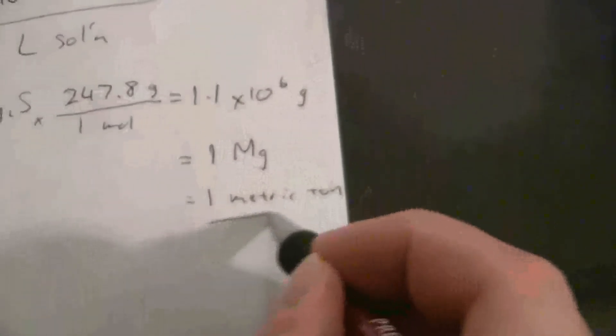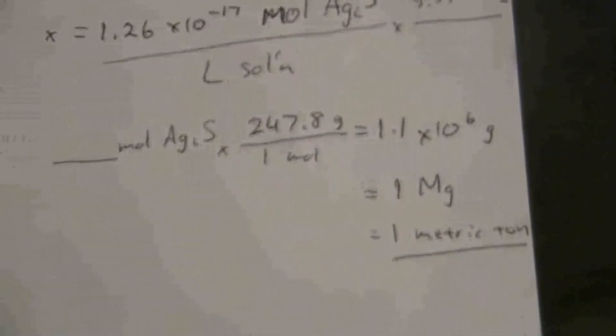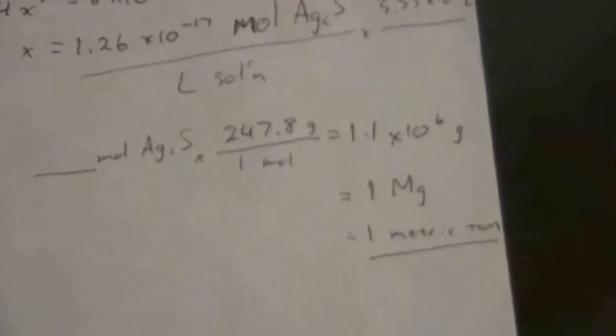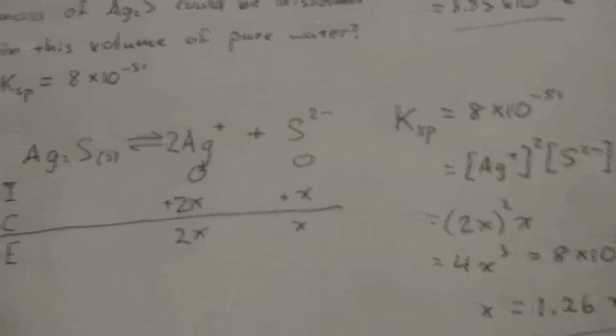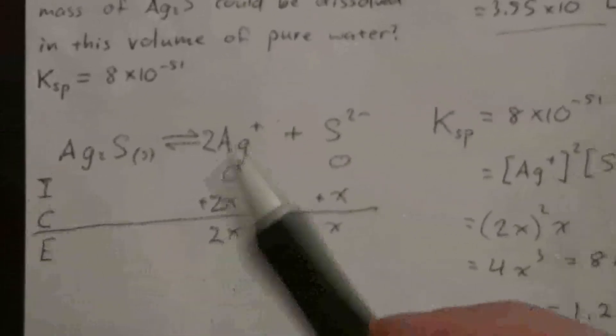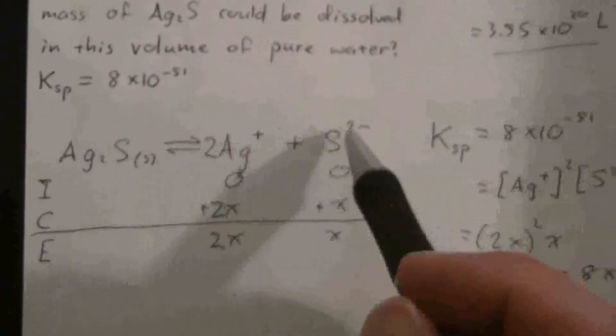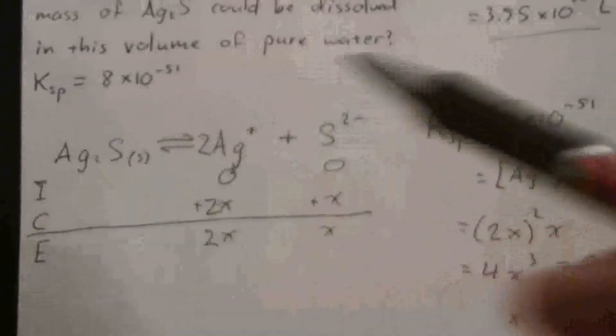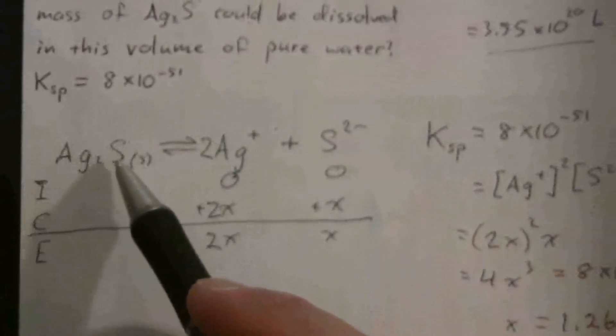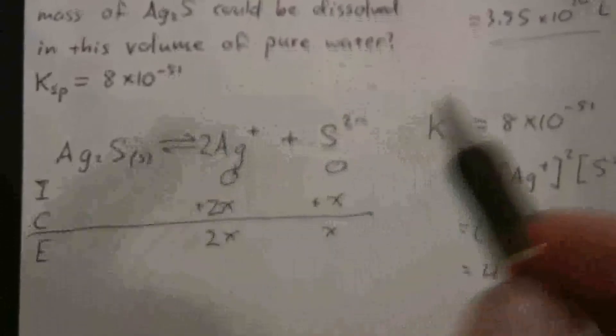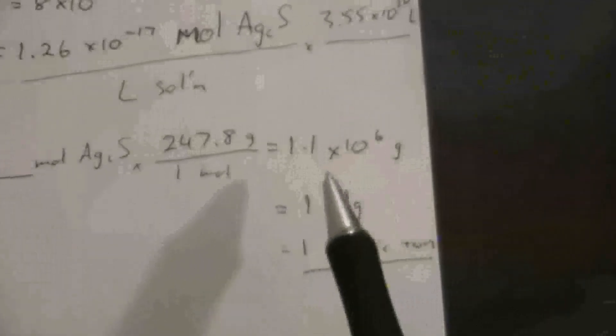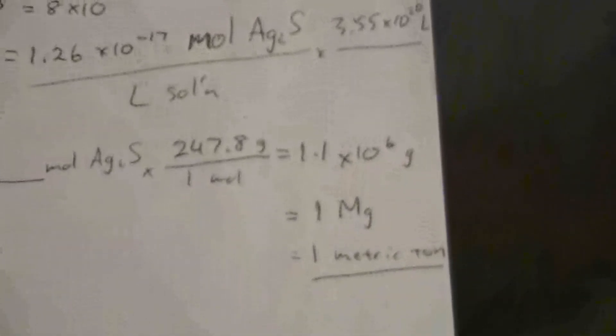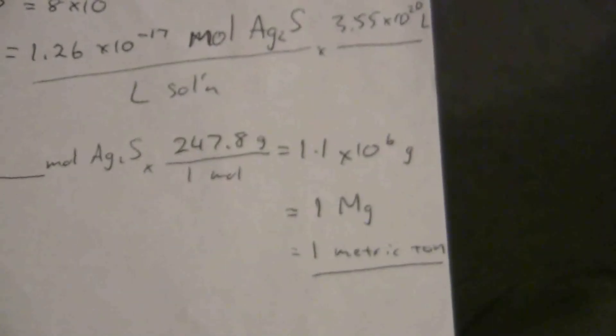So you can put a metric ton of silver sulfide and it will dissolve completely in a volume of water the size of the Atlantic Ocean. Now of course if you tried to put silver sulfide in the actual Atlantic, it already has a certain amount of these ions, and that would minimize the amount of the solid that would actually dissolve, because these would not be zero. That would prevent the silver sulfide from dissolving, at least to the same extent. But if you had pure water you'd have a metric ton that would be able to dissolve - a large amount just due to the sheer volume, extreme volume of the Atlantic.